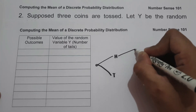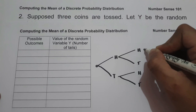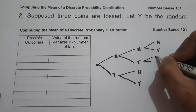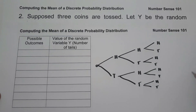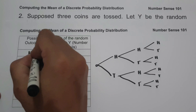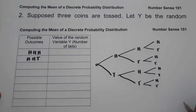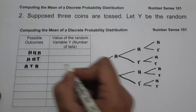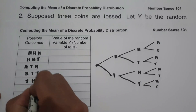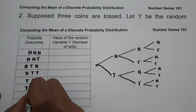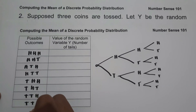On the first toss, we have head and tail. Using the tree diagram, the possible outcomes are: HHH, HHT, HTH, HTT, THH, THT, TTH, and TTT.